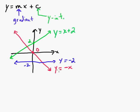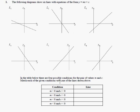So that's basically how it works out. Let's do a couple problems with gradient-intercept form. The first problem wants to see if you understand what gradient-intercept form means. It says the following diagrams show six lines L1 through L6 with equations in the form y equals mx plus c. In the table below there are four possible conditions for the pair of values of m and c — the gradient and y-intercept. Match each condition with one of the lines.